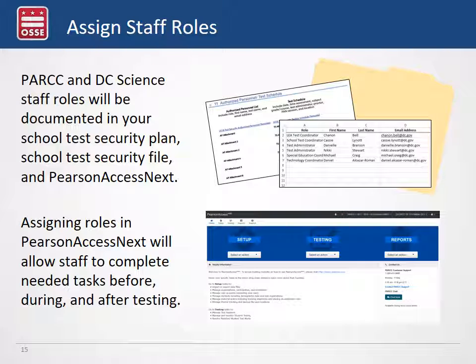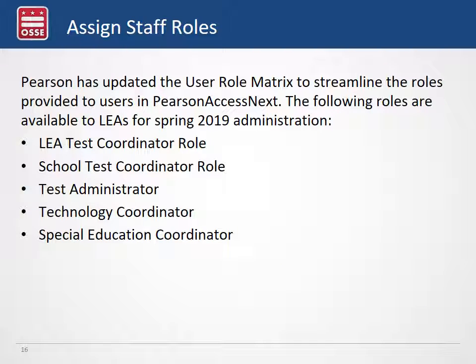Assigning staff roles happens in a couple of locations. For Park and DC Science, document it in your school test security plan, the school test security file, and in Pearson Access Next. Assigning roles in Pearson Access Next allows staff to complete tasks before, during, and after testing. Updated user roles this year include LEA test coordinators, school coordinators, test administrators, and technology and special education coordinators. If you're an LEA or school test coordinator, you can assign roles to other people in the system and provide access to your staff.